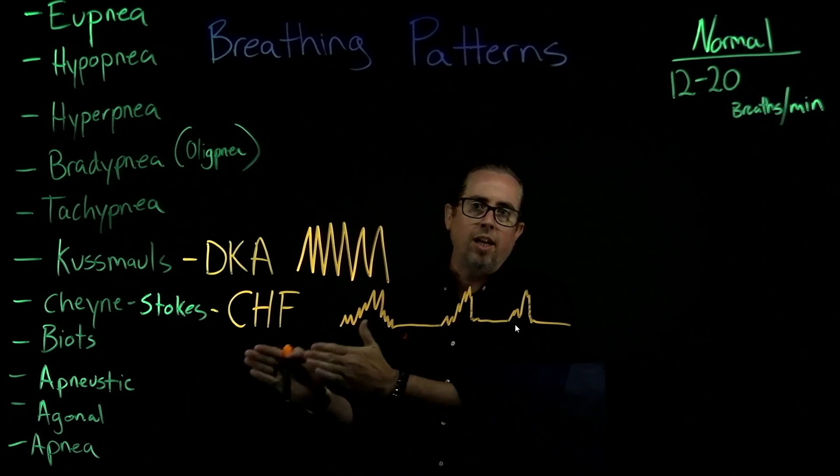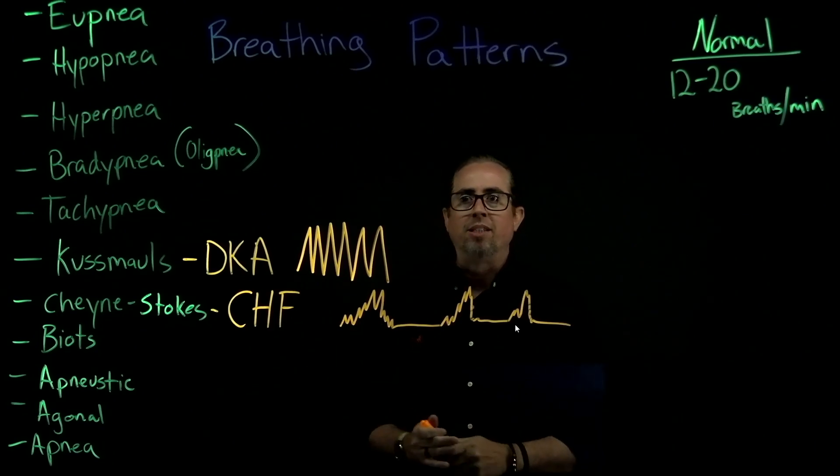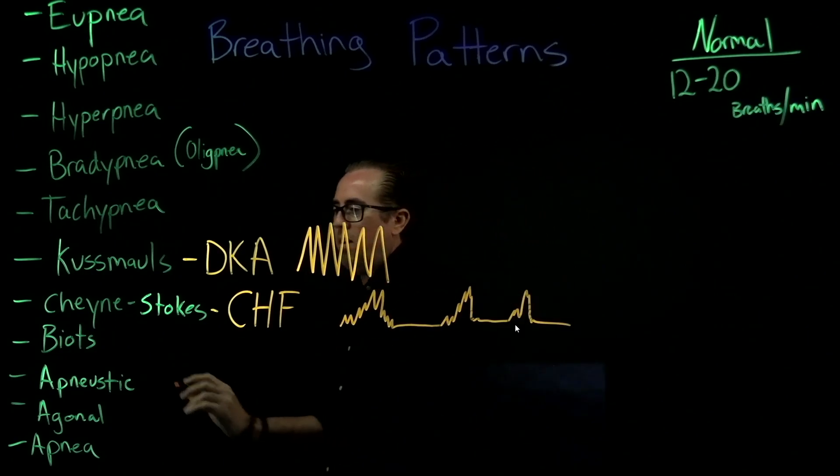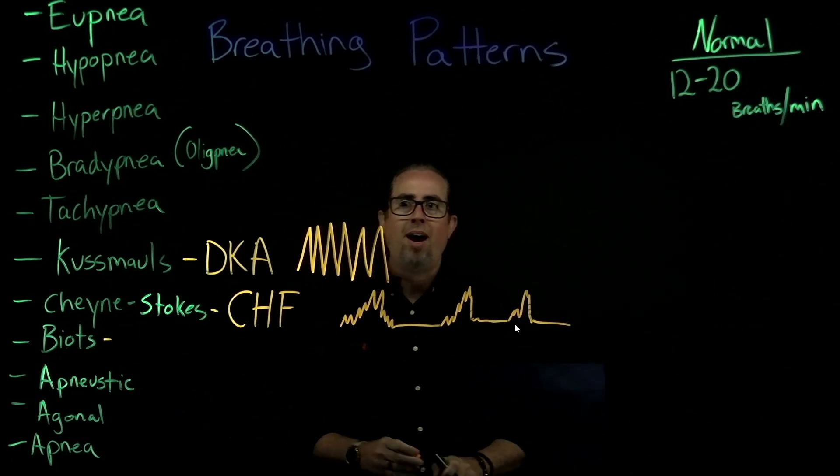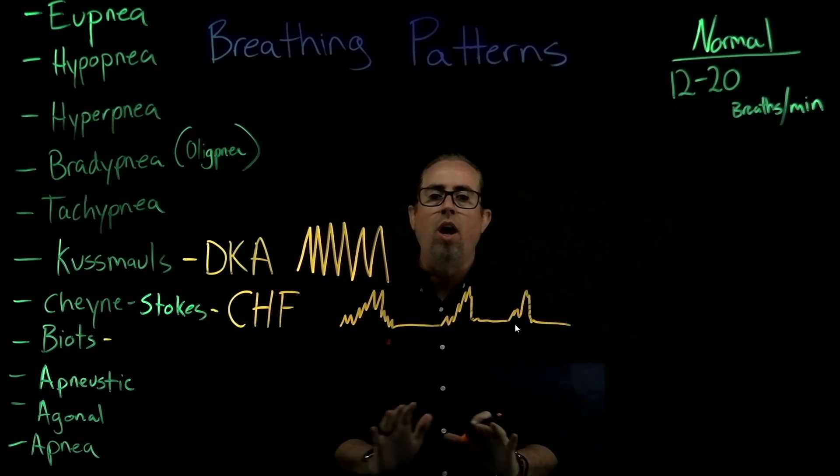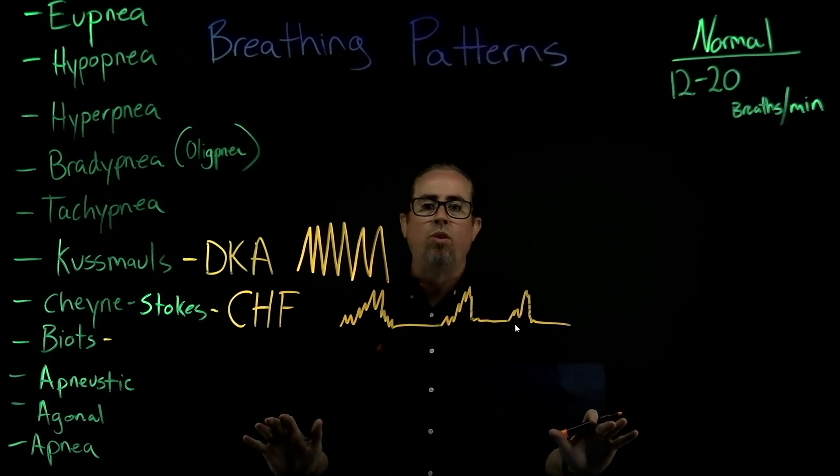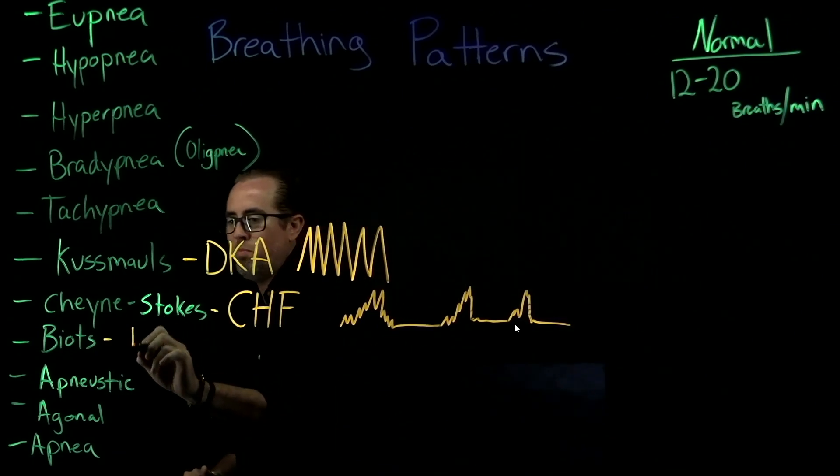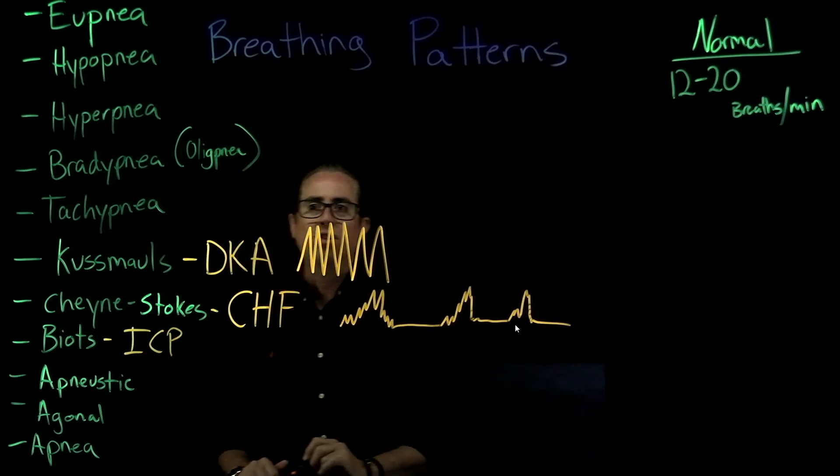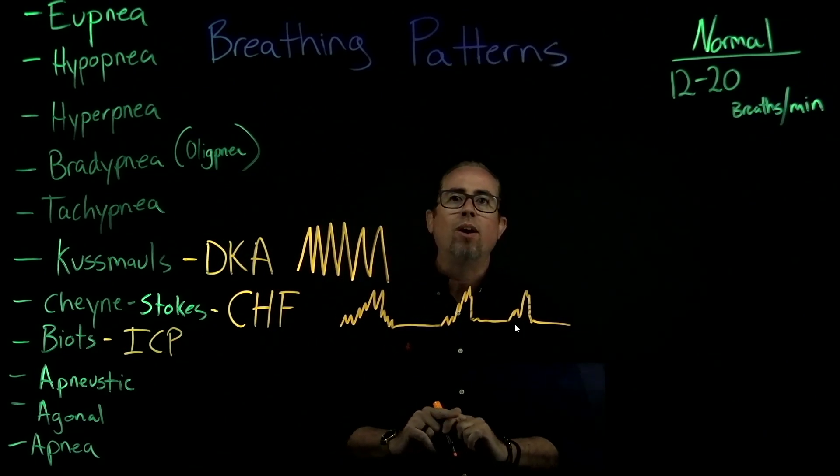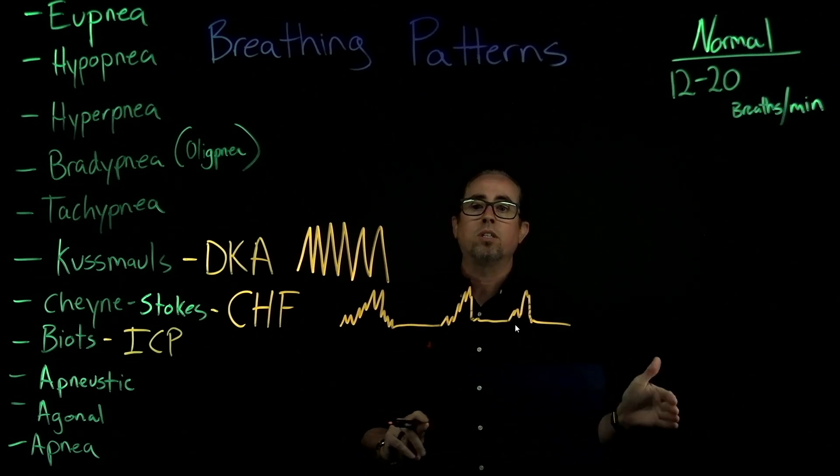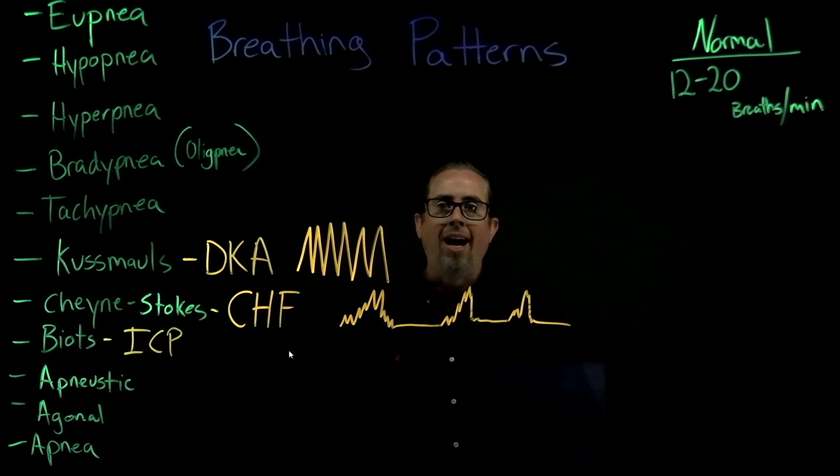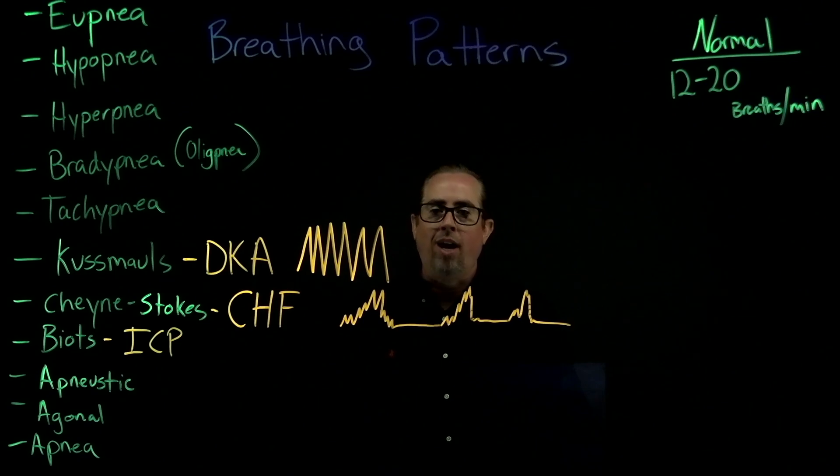Next one: Biot's. Biot's breathing is unpredictable. You cannot predict the variable on this one, and this is why: because the message is getting a little mixed up. Why? ICP or CNS issues—intracranial pressure or central nervous system problems. That's what you'll see with Biot's breathing. Very inconsistent.